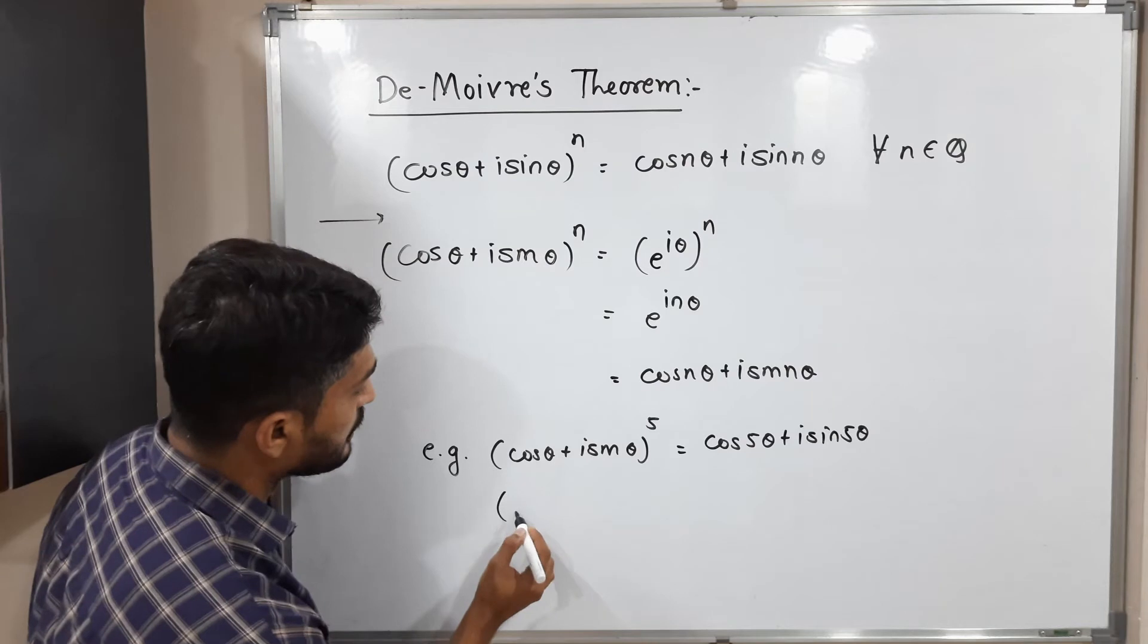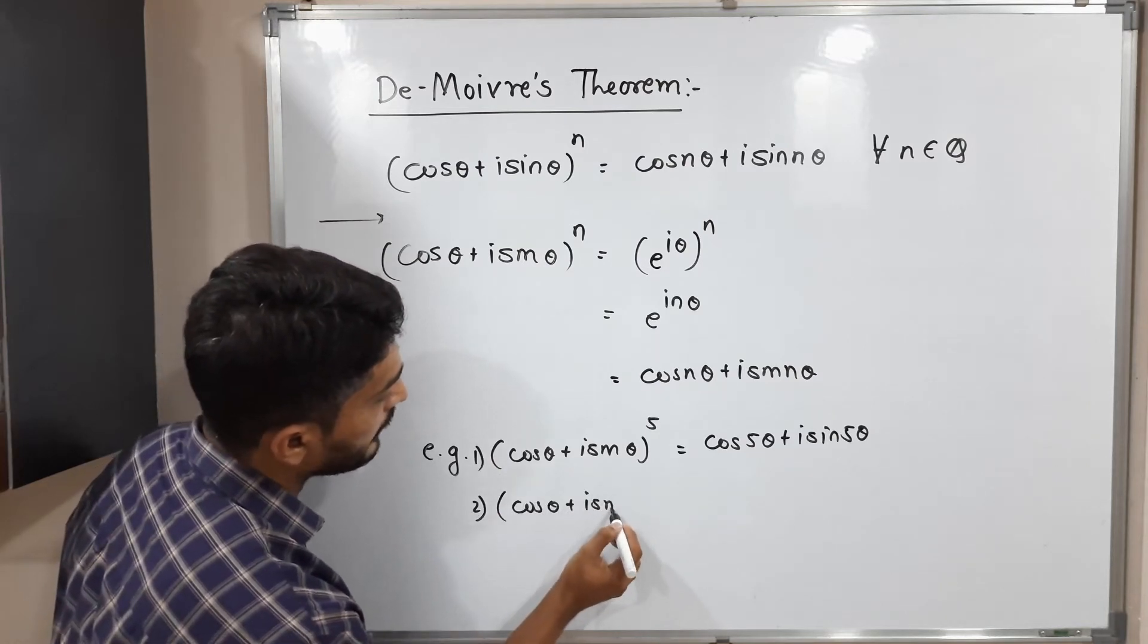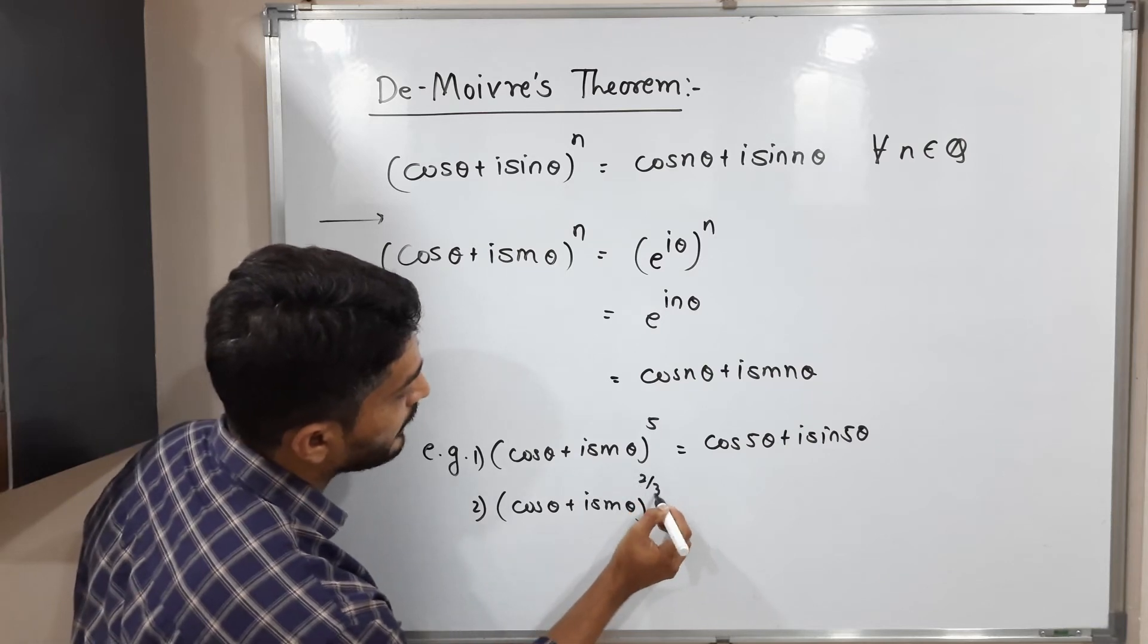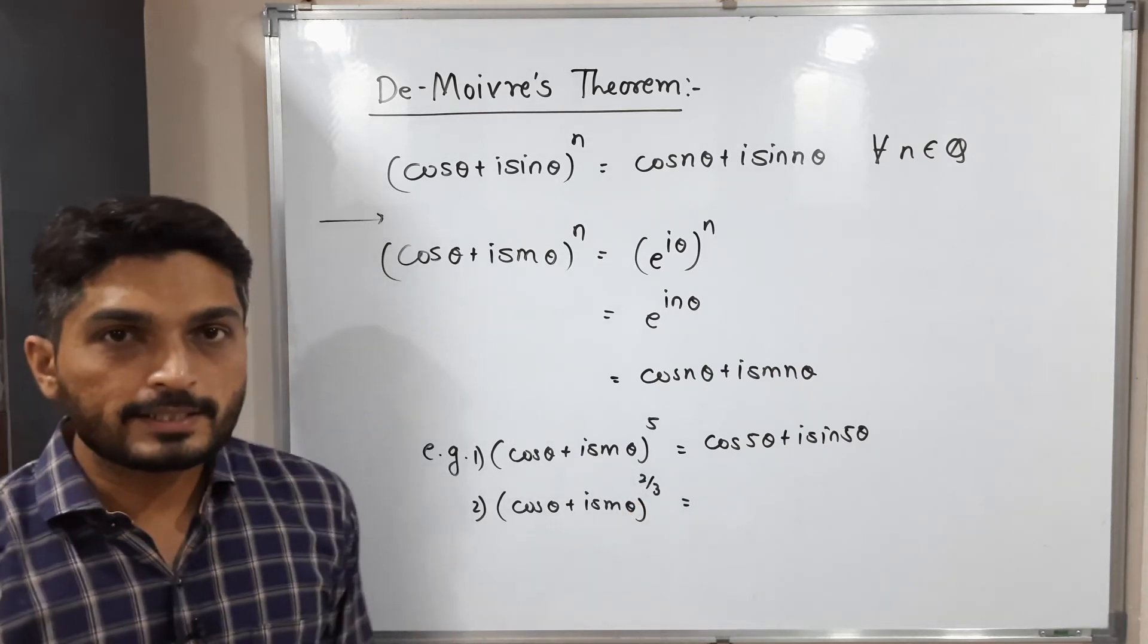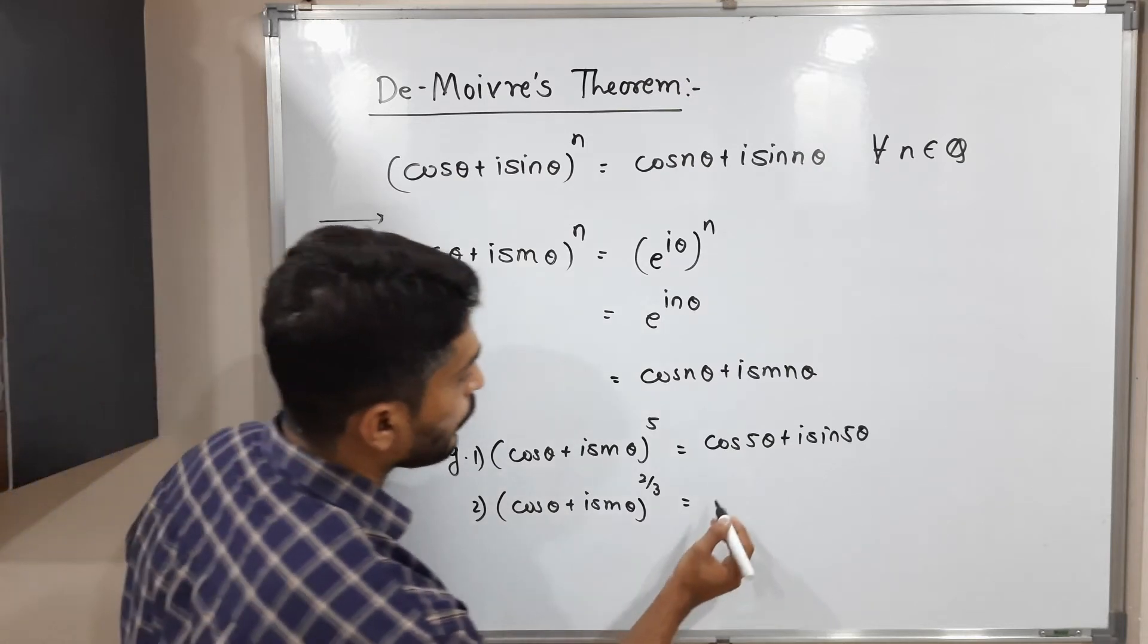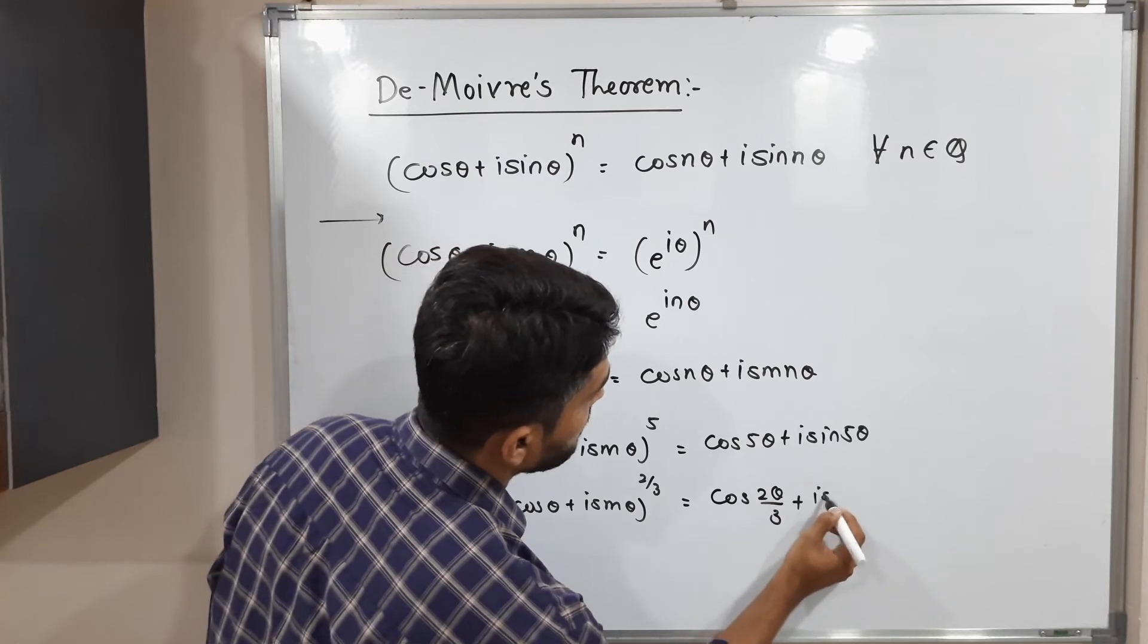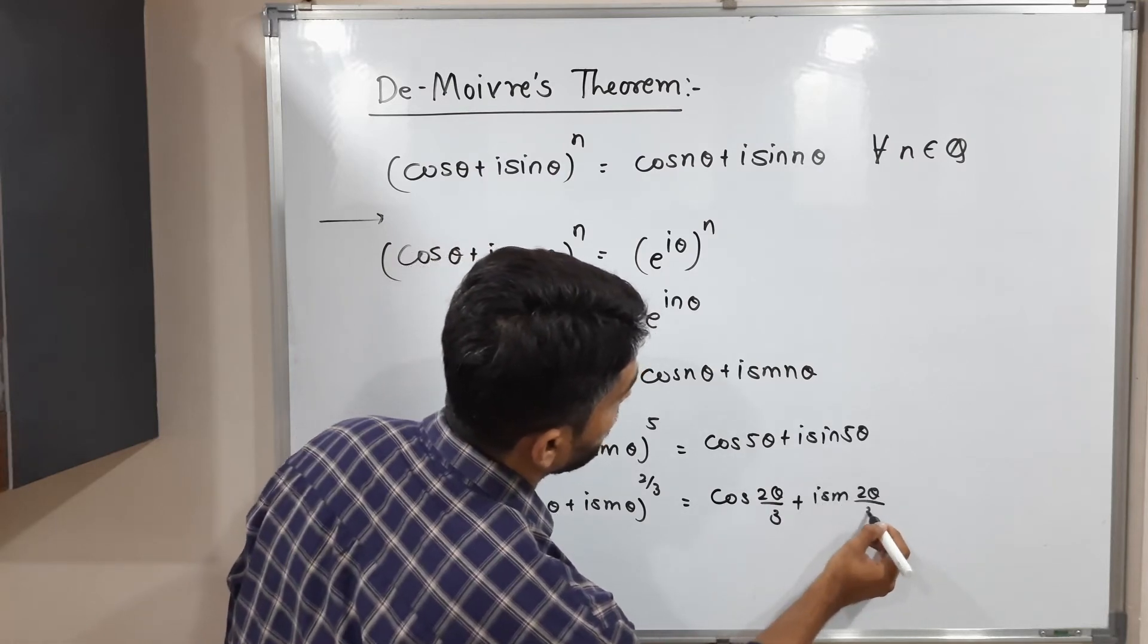So if we have any rational number, this is the first example. Second example, (cos θ + i sin θ)^(2/3). Will you tell me what I supposed to write using De Moivre theorem? Yes, we can write here cos(2θ/3) + i sin(2θ/3).